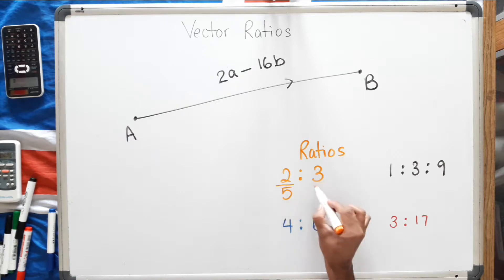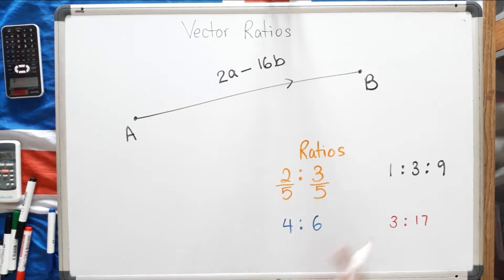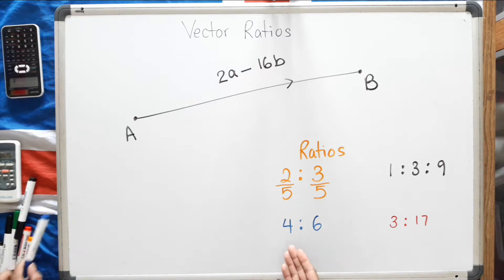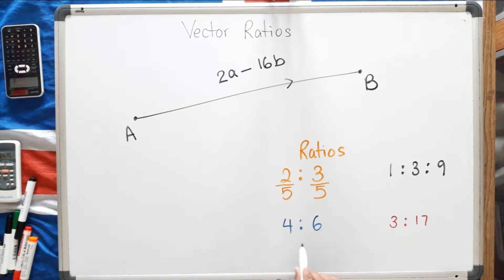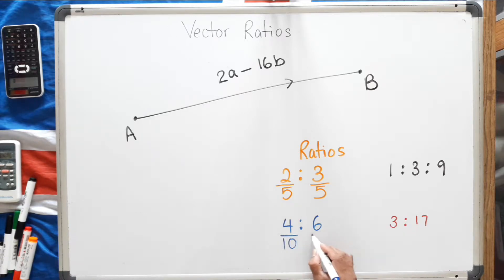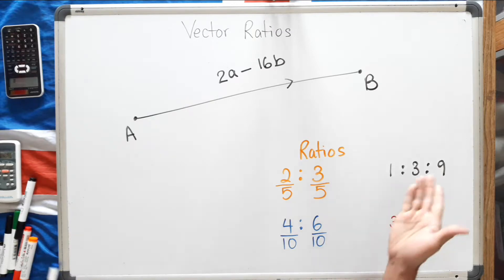So the ratio 2 to 3 really means 2 fifths and 3 fifths. Let's try the blue one. If you see the ratio 4 to 6, to get the denominators you just add the numbers in the ratio. So 4 plus 6 is 10, so this really means 4 tenths and 6 tenths.